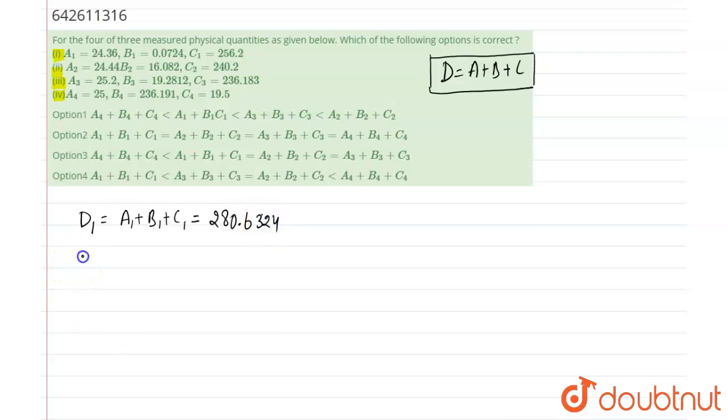Value of D2 is sum of a2 plus b2 plus c2, that is equal to 280.722. D3 means a3 plus b3 plus c3 is equal to 280.6642.